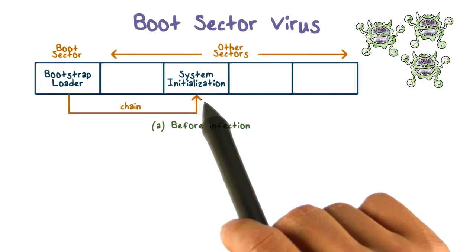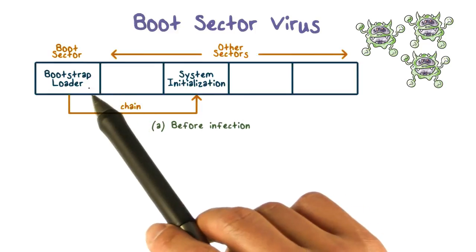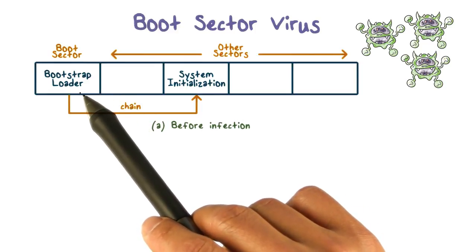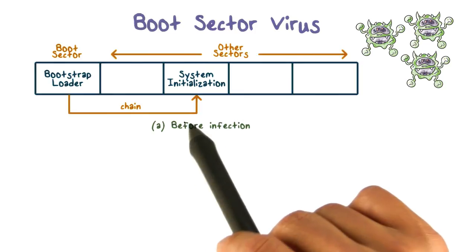When a system is booted, the code in the boot sector will always run first. And this code is called the bootstrap loader. The bootstrap loader is typically responsible for loading the operating system.